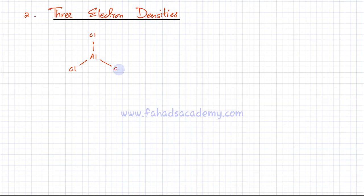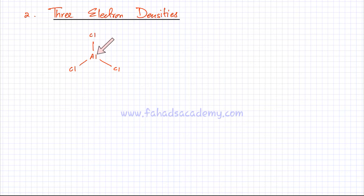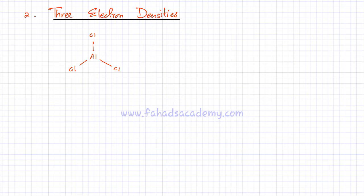So the bonds are going to be repelling each other. Electrons in this bond repel electrons in the other bonds. The only way possible for the three bonds to exist is if they are as far away from each other as possible. The only way that's possible is if aluminum chloride has this fan shape, with angles of 120 degrees between the bonds.